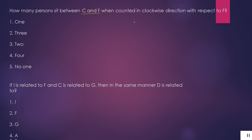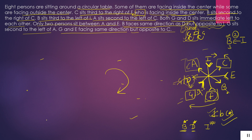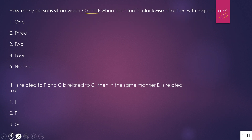Question 3: How many persons sit between C and F when counted in clockwise direction with respect to F? C aur F ke beech mein kitne vyakti baithe hain jab hum F ke side se clockwise direction mein dekhenge? The clock moves this way. F is here, C is here — counting clockwise from F to C: 1, 2, 3, 4. So 4 is our answer. The 4th option is correct.